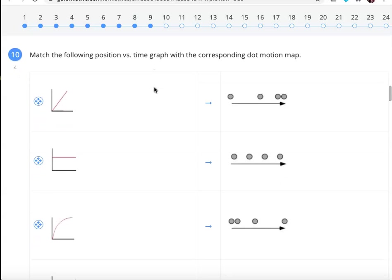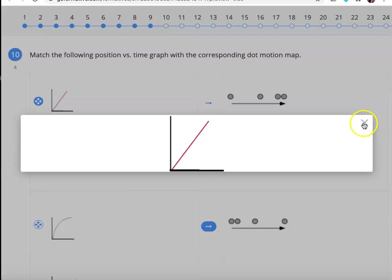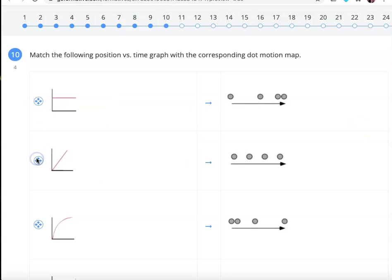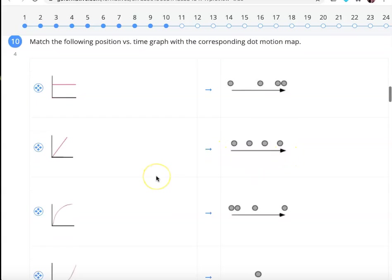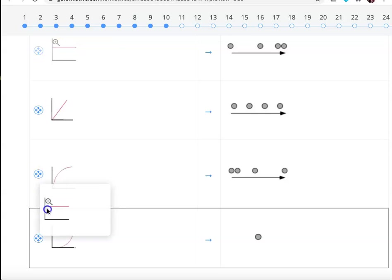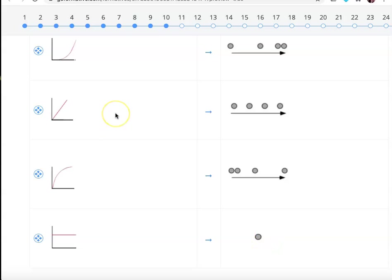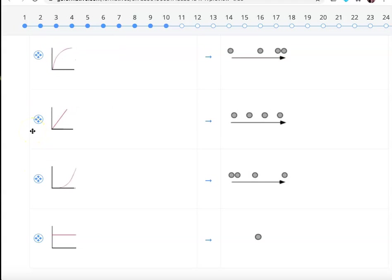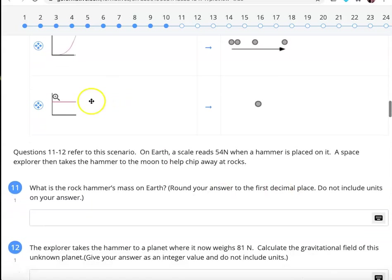Now we're going to drag and drop again. Match the following position versus time to this corresponding dot motion map. Well, I've got a constant velocity forward graph. So I'm going to match it up with constant velocity equally spaced dots. I've got an unmoving graph. So I'm going to match it up with a single dot that doesn't go anywhere. I'm going to take my two acceleration plots and switch them. And now let's double check.